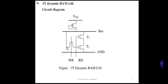In the write operation, we have to make WR equal to 1 and RD equal to 0 to write data into the memory. With WR equal to 1, transistor T1 is turned on because its gate is connected to the WR line, and transistor T3 is turned off.